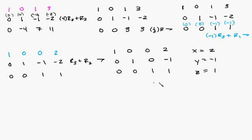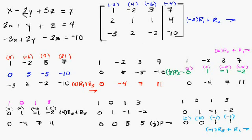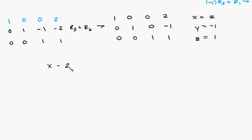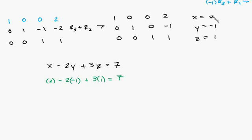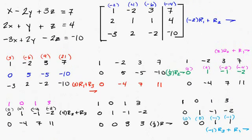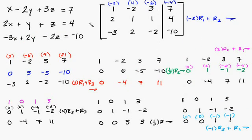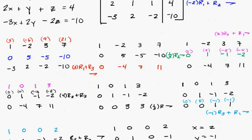We can go ahead and check it by plugging into one of the equations. The first equation is x minus 2y plus 3z equals 7. So x equals 2, minus 2 times y which equals negative 1, plus 3 times z which is 1, equals 7. So 2 plus 2 plus 3 equals 7, that's 4 plus 3 equals 7. You can plug in the same numbers to check the other equations, but usually if you check one, they all work out.